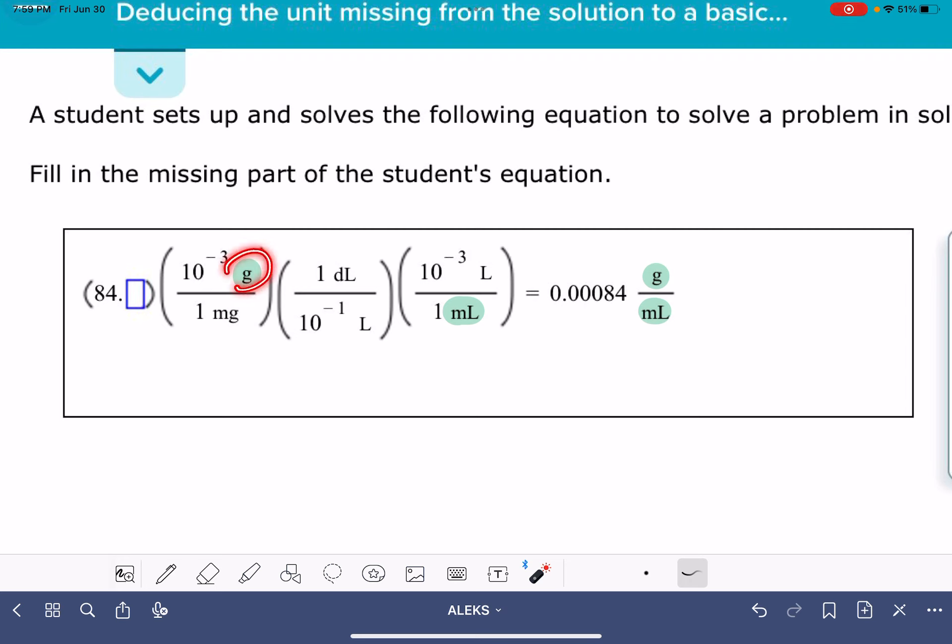These are the important units in this problem. These are the units that need to stay in this problem. All of the other units in this problem need to cancel themselves out, including the units over here as well. They need to be canceled out. However this problem is set up, it needs to be set up in such a way that everything cancels except for gram and milliliter. That's how a unit conversion problem works.